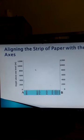After that, we align the strip of paper with the axis. So the strip of paper is placed along the horizontal axis. As I said earlier, point A on the strip of paper coincides with this vertical axis and point B coincides with this other axis, so that the length of this strip of paper is exactly equal to the length of the horizontal axis.